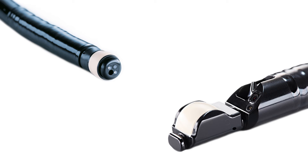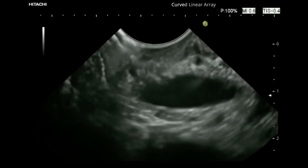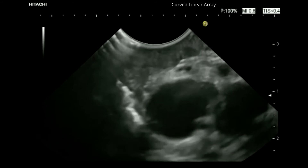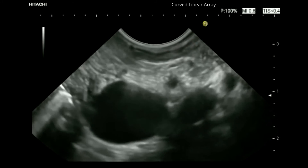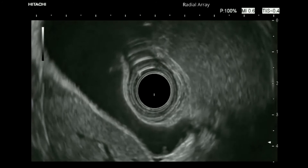Typical components at the distal end of ultrasound endoscopes include the ultrasound transducer, which transmits and receives ultrasound waves using the effect of piezoelectricity. Inside the transducer there are one or more piezoelectric crystals. When electrical pulses are applied, the crystals oscillate and produce ultrasound waves. When ultrasound waves are reflected back from tissue, the crystals oscillate and produce electrical pulses. A curved linear array transducer images in a plane parallel with the axis of the endoscope, while a radial array transducer images in a plane perpendicular to the axis.